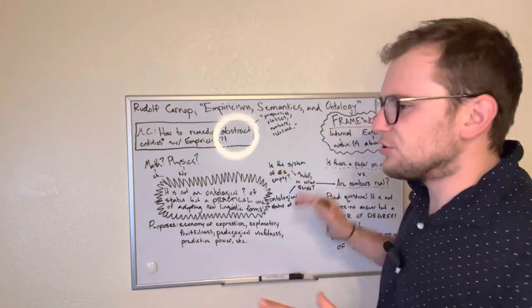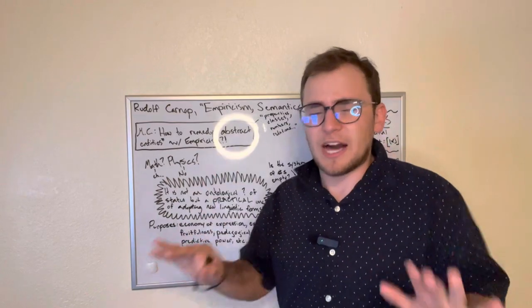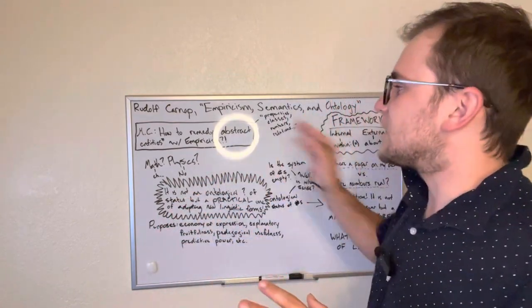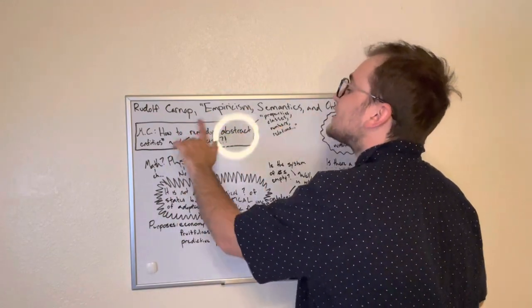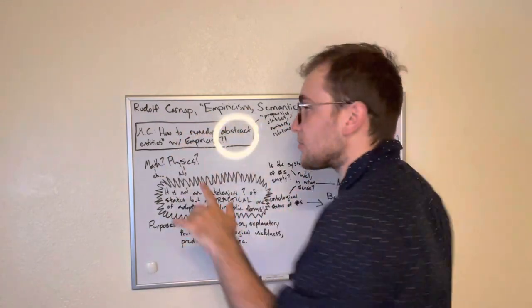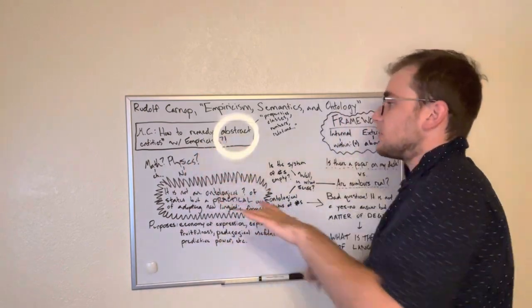And a general introduction to it if you want to hear more. There's a lot to say about this article. So let's just jump in. I think the main contention is trying to get how to remedy abstract entities, Carnap calls them throughout the work, with empiricism. So let's explain both these.